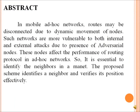In mobile ad-hoc networks, routes may be disconnected due to dynamic movement of nodes. Such networks are more vulnerable to both internal and external attacks due to the presence of adversarial routes. These nodes affect the performance of routing protocols in ad-hoc networks. So it is essential to identify the neighbors in a MANET. The proposed scheme identifies a neighbor and verifies its position effectively.